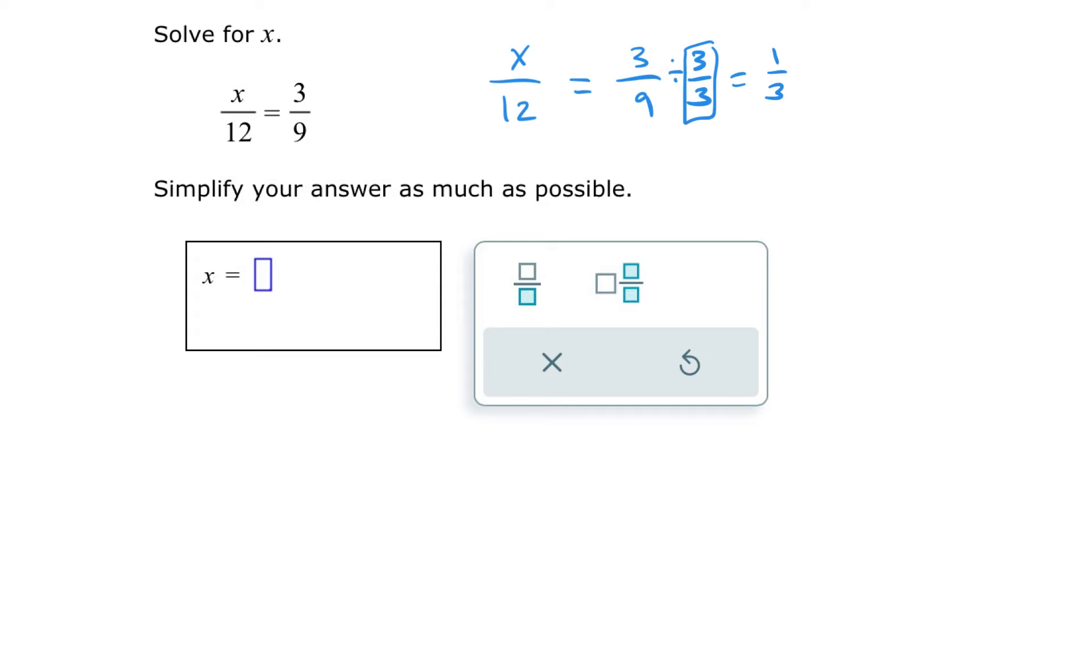Then I can rewrite this proportion. When I'm matching this up, I can write it as x over 12 equals 1 third, but I like to put the smaller number on the left and then the missing value on the right, just because that way I'm multiplying instead of dividing.